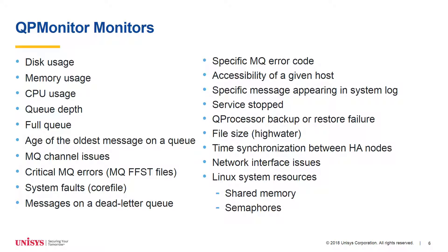QP Monitor can be configured to monitor disk, memory, or CPU usage; queue depth; full queue; age of the oldest message on a queue; MQ channel issues; critical MQ errors; system faults; messages on a dead letter queue; specific MQ error codes; accessibility of a given host; specific messages appearing in a system log; service stopped; key processor backup or restore failure; file size; time synchronization between two HA nodes; network interface issues; and Linux system resources, including shared memory and semaphores.